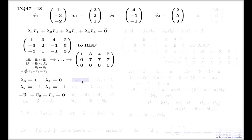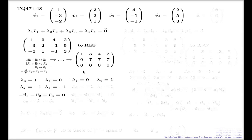Now I'll take a rather trivial variant: set the non-leading variables to λ3 = 0 and λ4 = 1 instead of 1 and 0. That will give me another set of four numbers that vanishes my linear combination. We don't need this to conclude linear dependence — we've already done that — but I'm doing it for the sake of the later presentation.